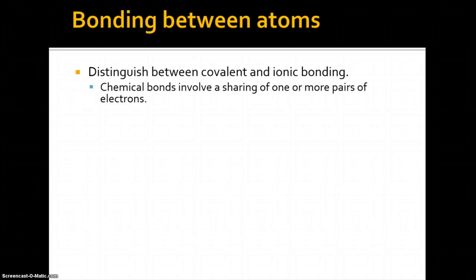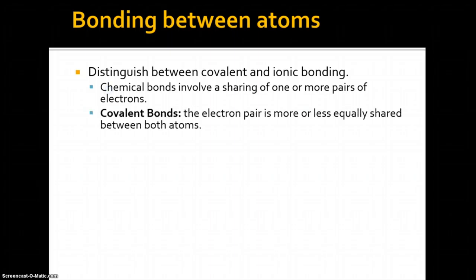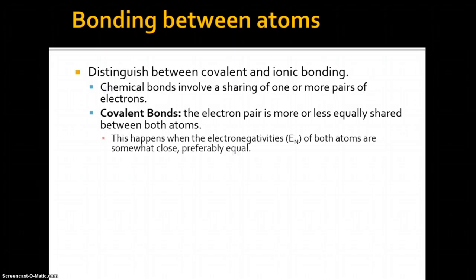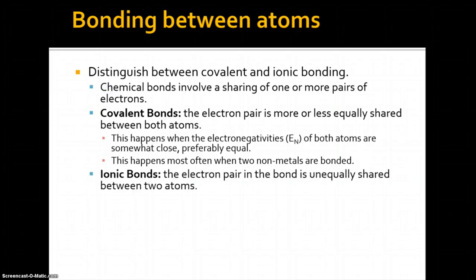Chemical bonds involve a sharing of one or more pairs of electrons. Covalent bonds are where the electron pair is more or less equally shared between both atoms. This happens when the electronegativities of both atoms are somewhat close or preferably equal, and it happens most often when two nonmetals are bonded.